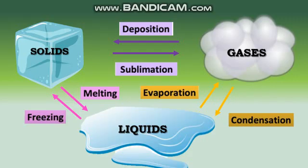When a solid changes into a gas, this is called sublimation. For example, snow or ice can change directly into water vapor without melting first into water. This can happen when it's very cold and can usually occur on windows during the winter.